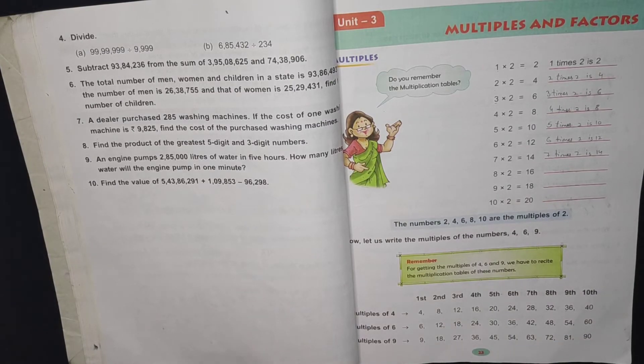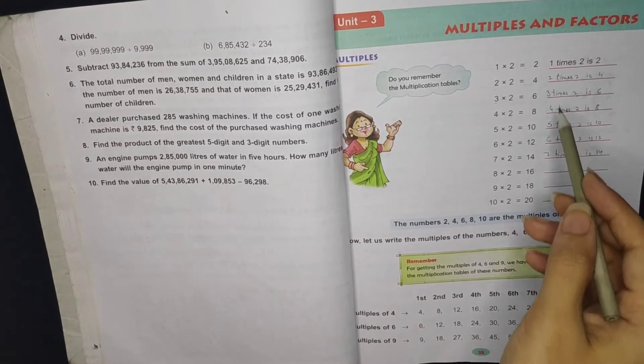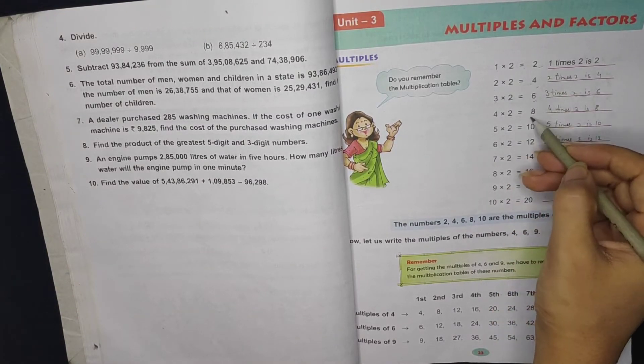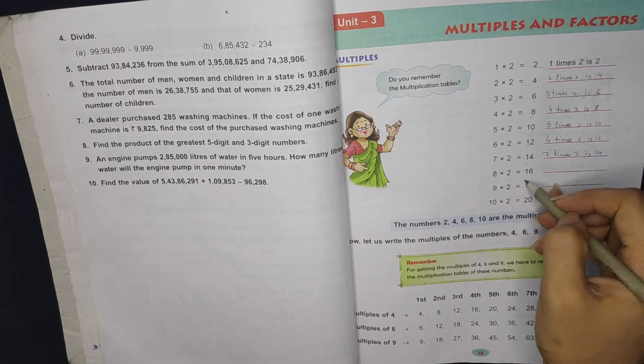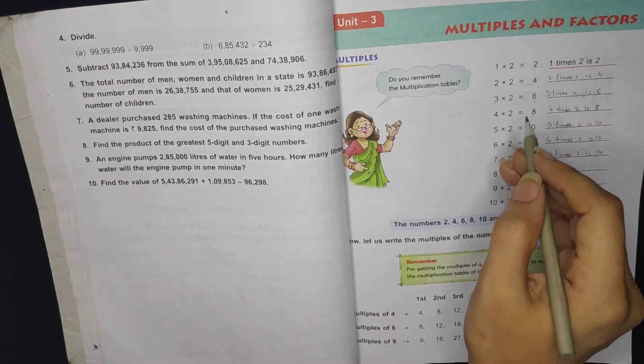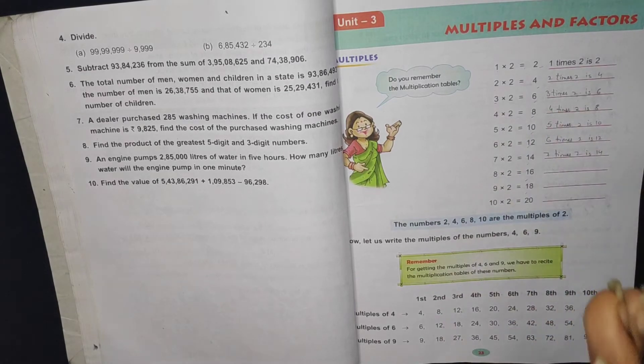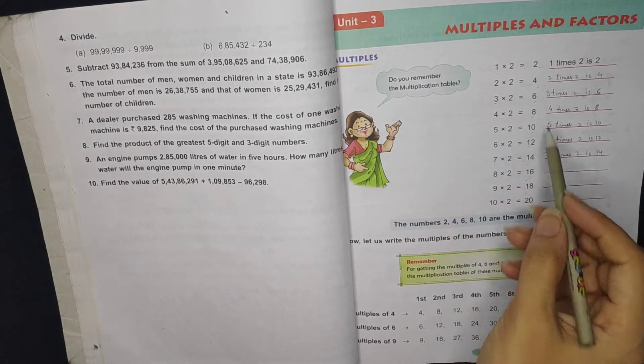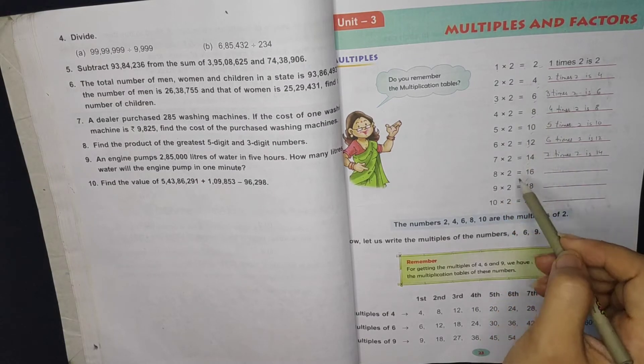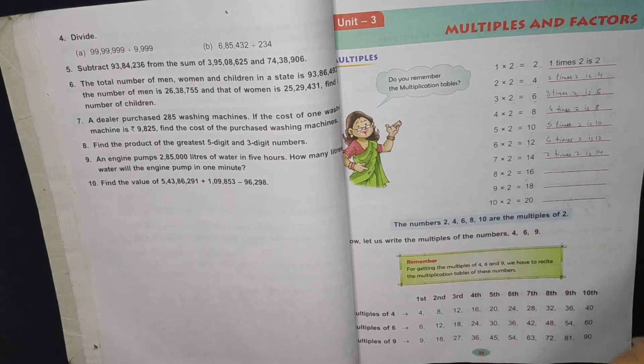Next, what are our multiples? These numbers we have: 2, 4, 6, 8, 10, 12, 14, 16, 18. These are all multiples of 2.